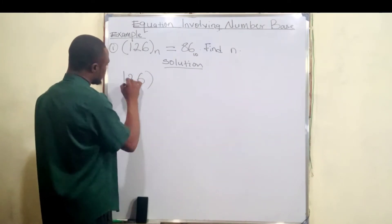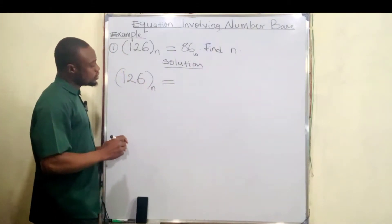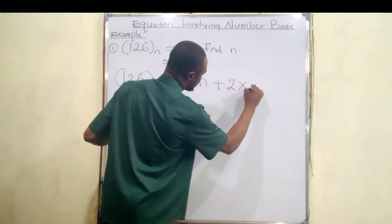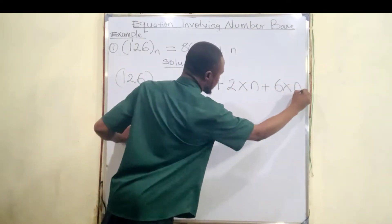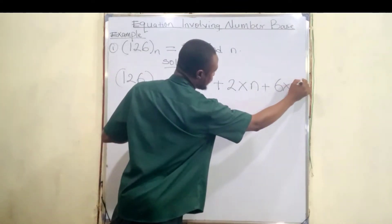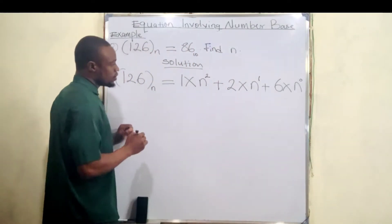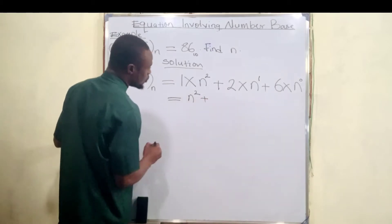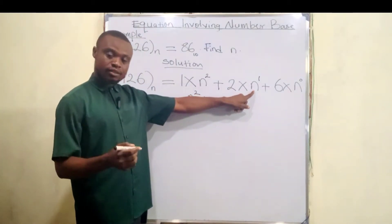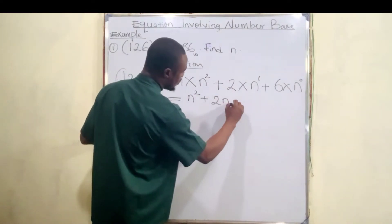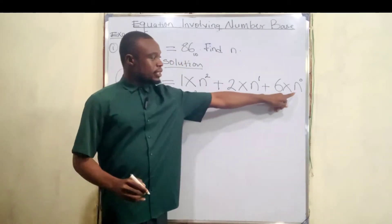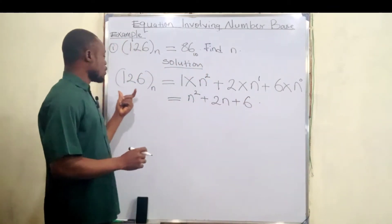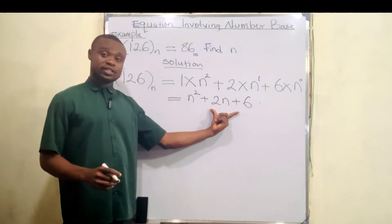We have 126 base n equal to 126 base n, which is equal to 1 times n plus 2 times n plus 6 times n. Now we write the powers from the right: zero here, one here, and two here. So n to the power of 2 multiplied by 1 is n squared, plus n to the power of 1 times 2 is 2n, plus n to the power of 0 is 1, and 1 times 6 is 6. So basically 126 base n equals n² + 2n + 6 in base 10.